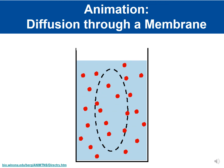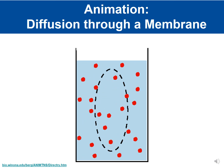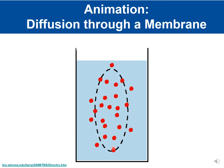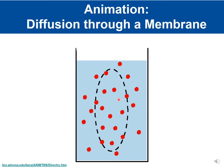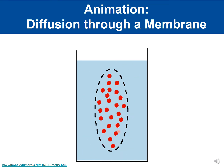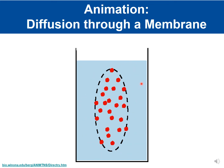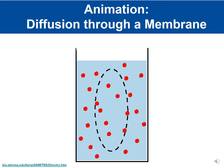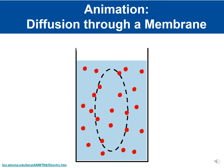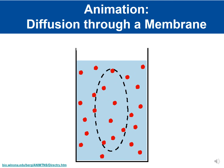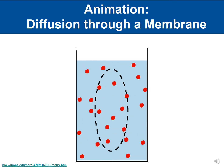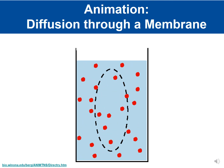This animation shows diffusion across a membrane. The dotted line represents the membrane. The red dye molecules start inside the membrane at high concentration and diffuse to the low concentration outside until equilibrium is reached. Not all membranes are permeable to everything — membranes are often selectively permeable, meaning some molecules can cross on their own and others cannot.